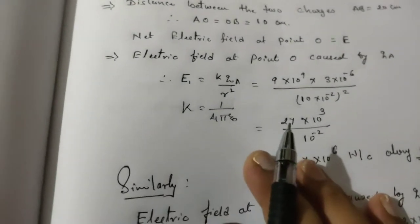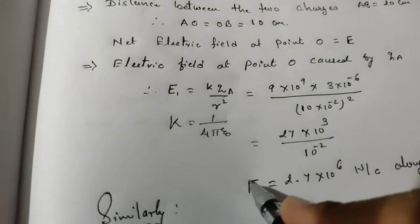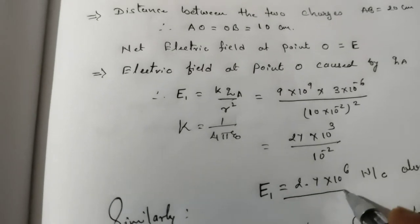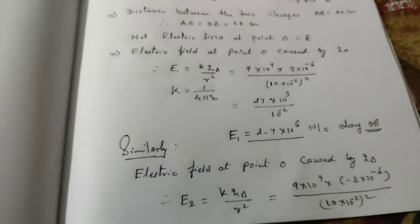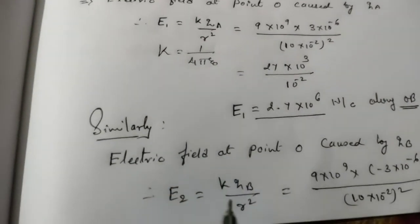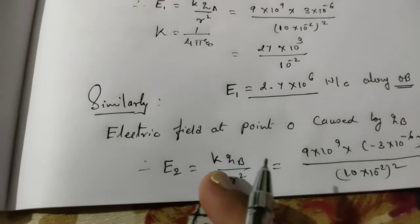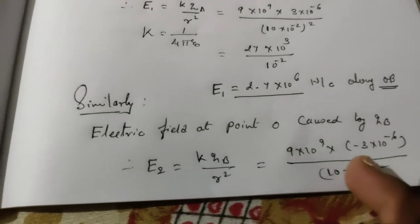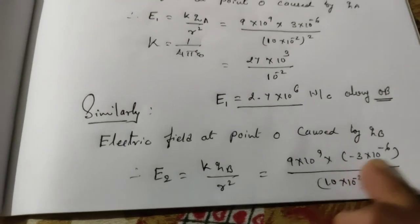By considering these values, the electric field due to QA charge is along the OB direction. Similarly, we calculate electric field E₂ for QB charge using the same formula K·QB/R².